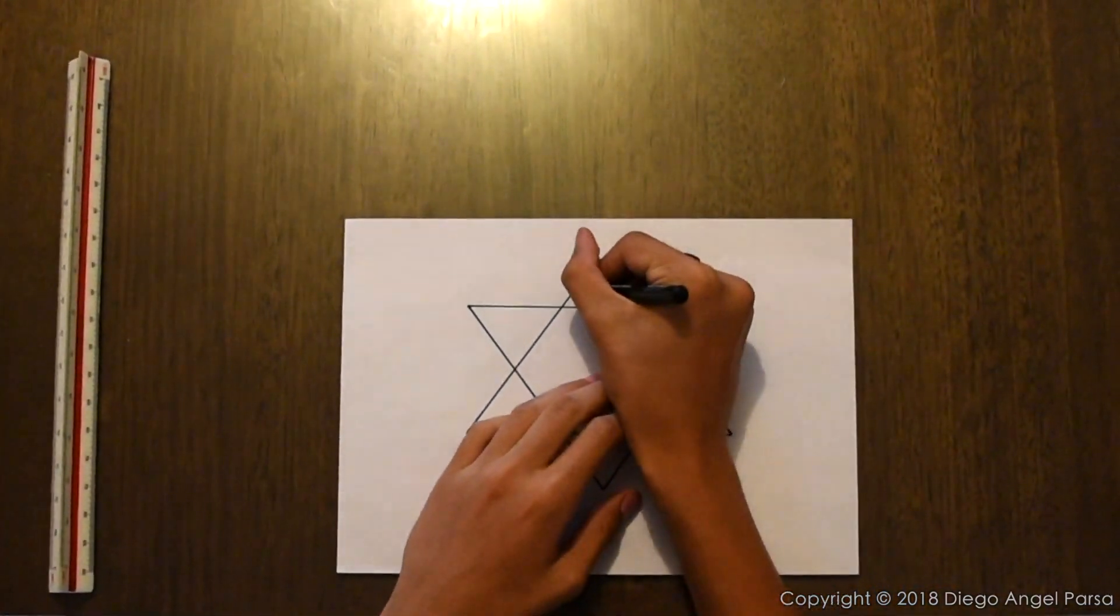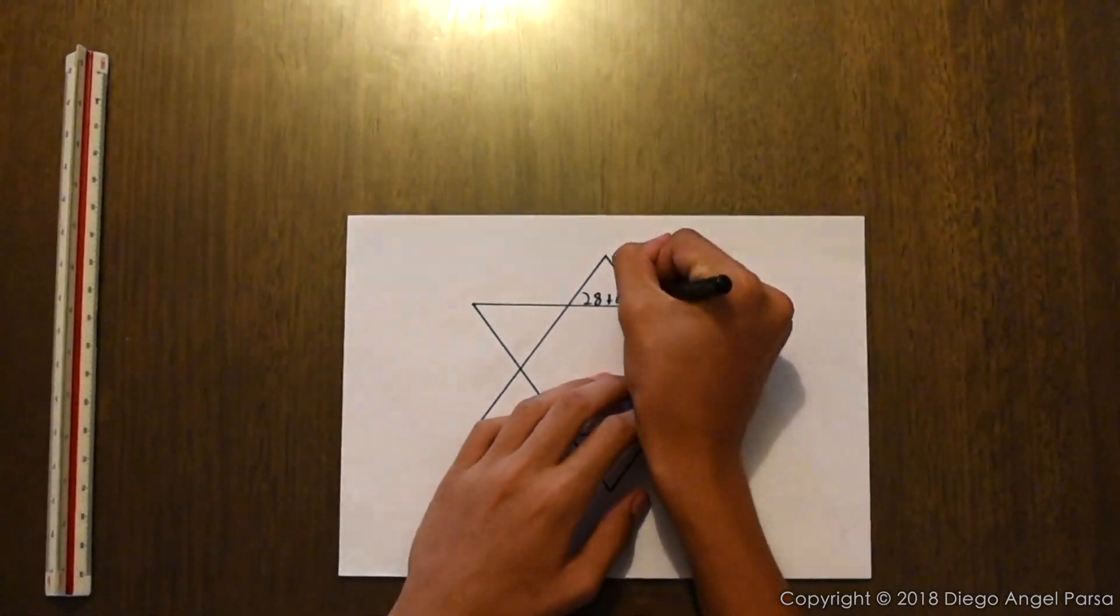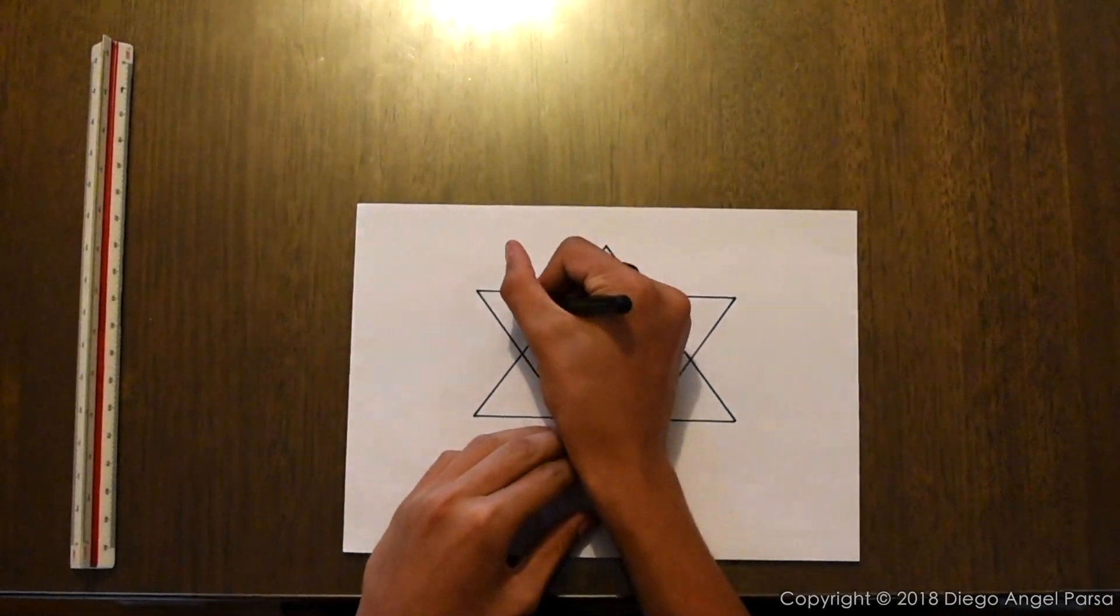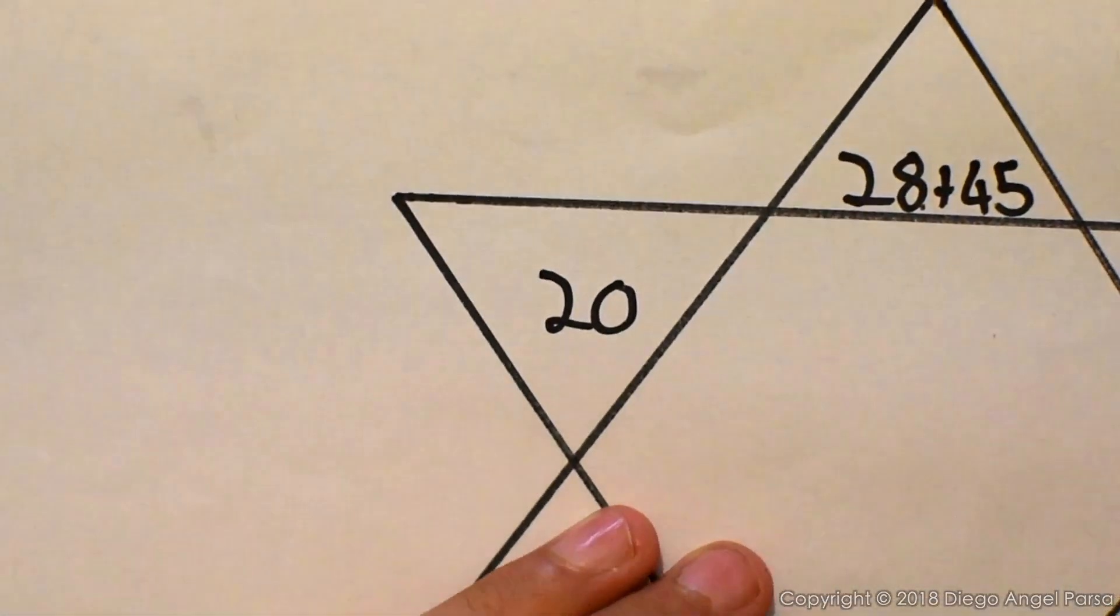Let's start with the numbers 28 plus 45. First you have to separate the tens from the units to make the equation easier to solve.